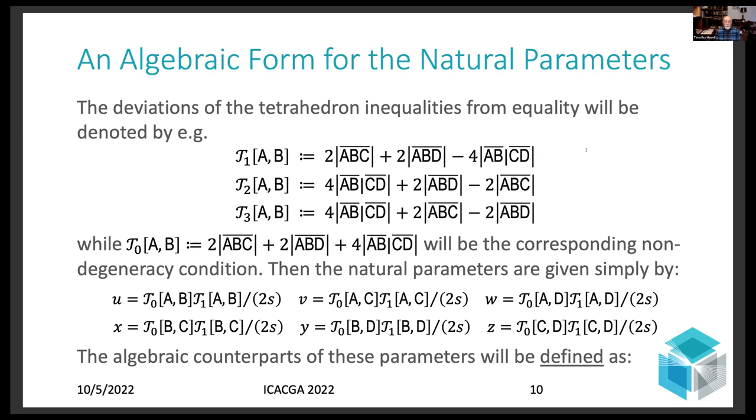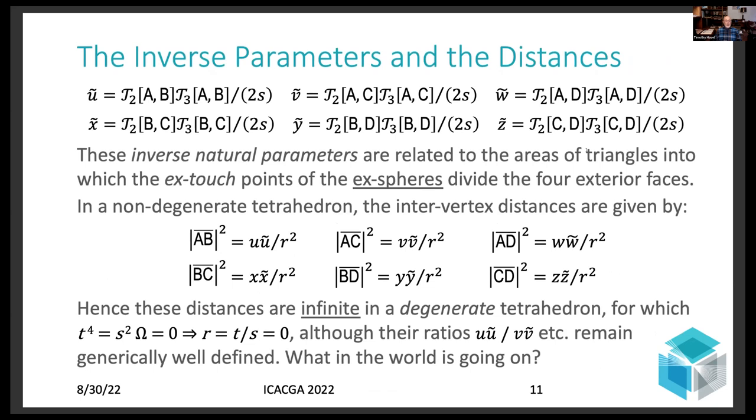But what about these other deviations of the tetrahedron inequalities from saturation, tau 2 and tau 3? Well, that leads to a natural definition of what I call the inverse parameters, which will be the analogous formulae, but now with tau 2 and tau 3 rather than tau 0 and tau 1. Okay, and those turn out to be related to the areas of the triangles into which the ex-touch points of the tetrahedron's ex-spheres divide its four exterior faces. And another reason they are very interesting is because when you put them together with the corresponding complementary natural parameters and divide by the square of the in-radius, you get the edge lengths of the tetrahedron, which immediately shows you that everything I've got here is sufficient to determine the tetrahedron up to isometry.